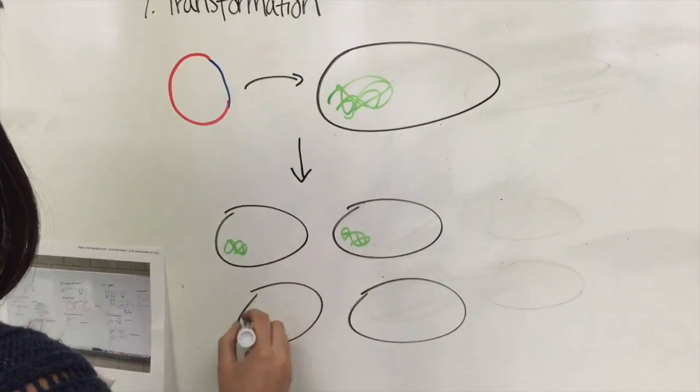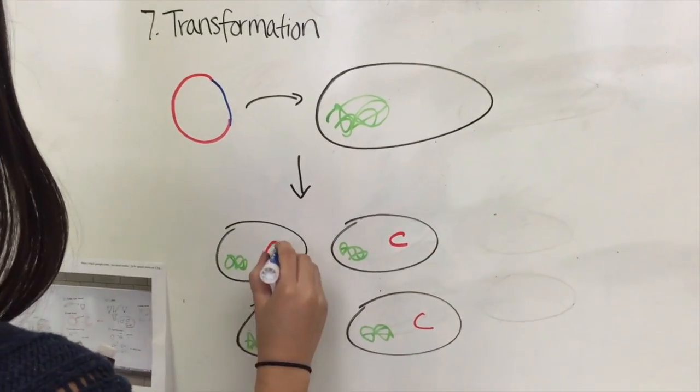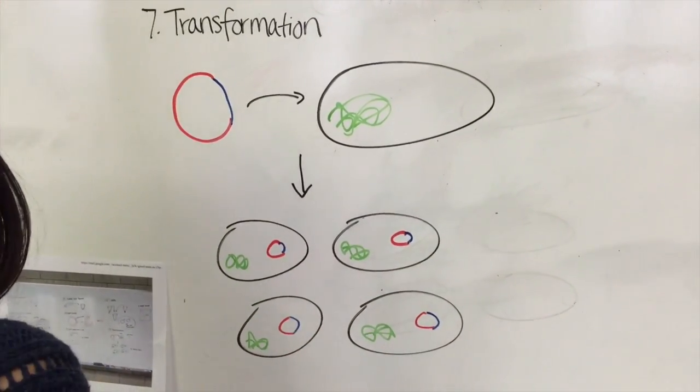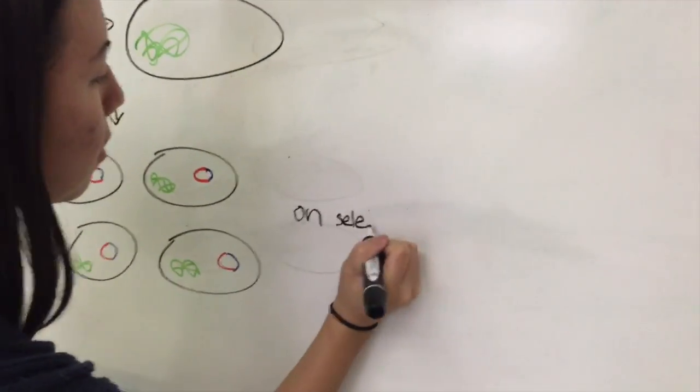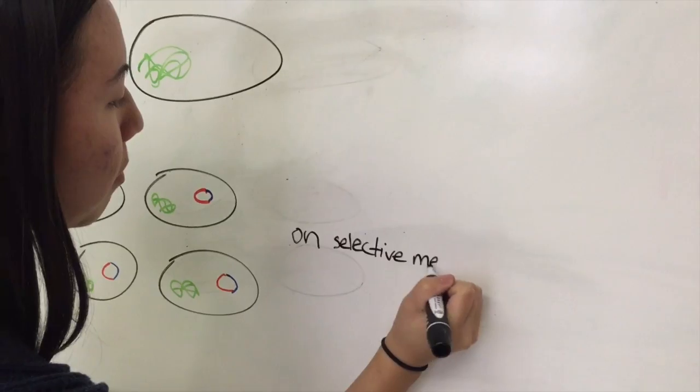Grow the bacteria with the plasmid incorporated in a condition that selects for the selectable marker. For example, with an ampicillin resistance marker on the plasmid, the bacteria can grow on ampicillin plates. This ensures that the plasmid is always being replicated and passed down through reproduction.